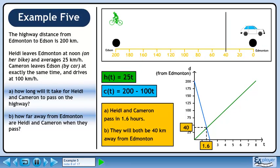We can now answer both parts A and B of this question using the intersection point. The amount of time it takes Heidi and Cameron to pass on the highway is the x value of the point of intersection. This is 1.6 hours. Their distance from Edmonton is the y value of the point of intersection. This is 40 kilometers.